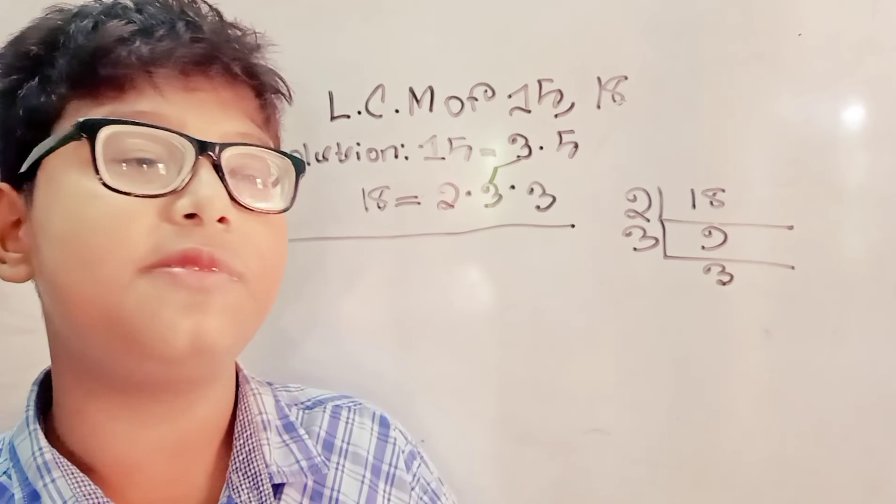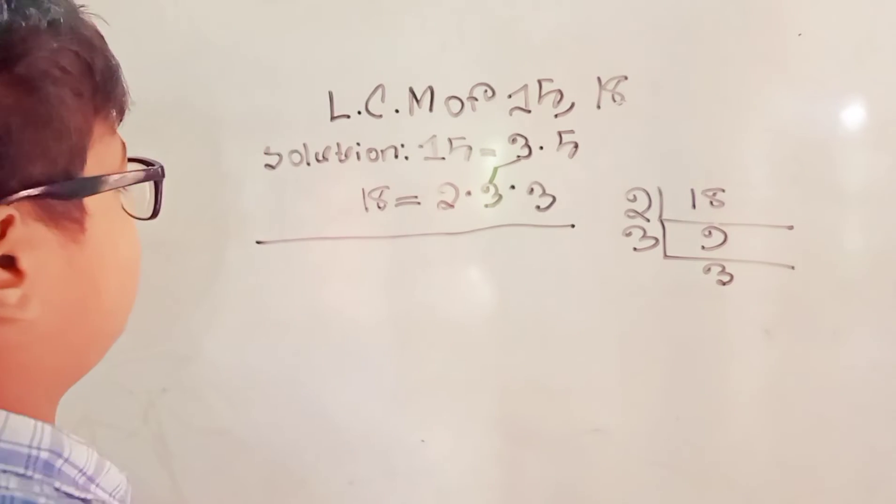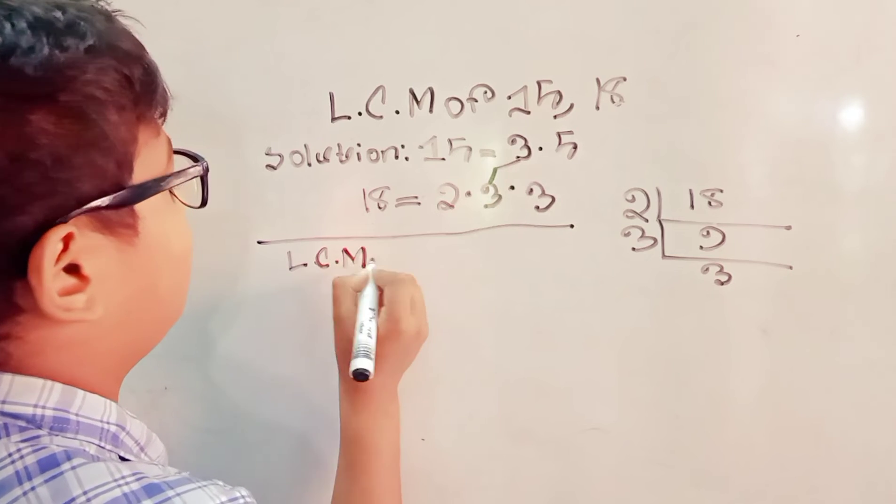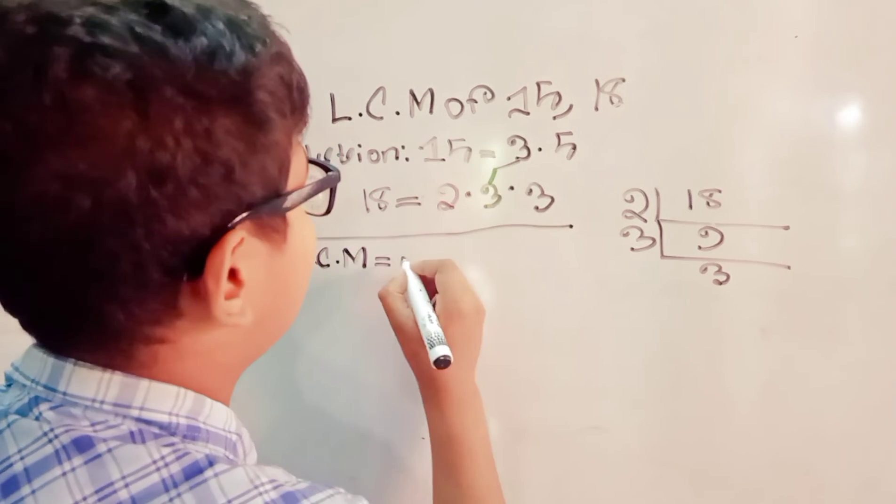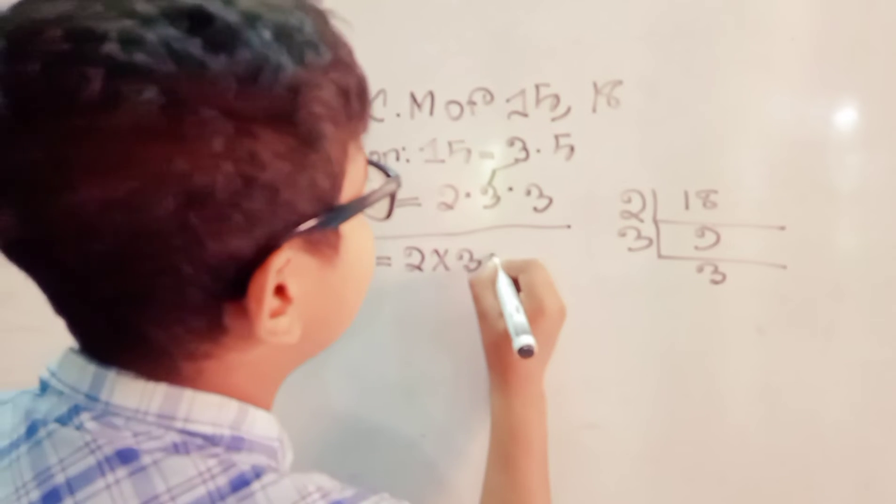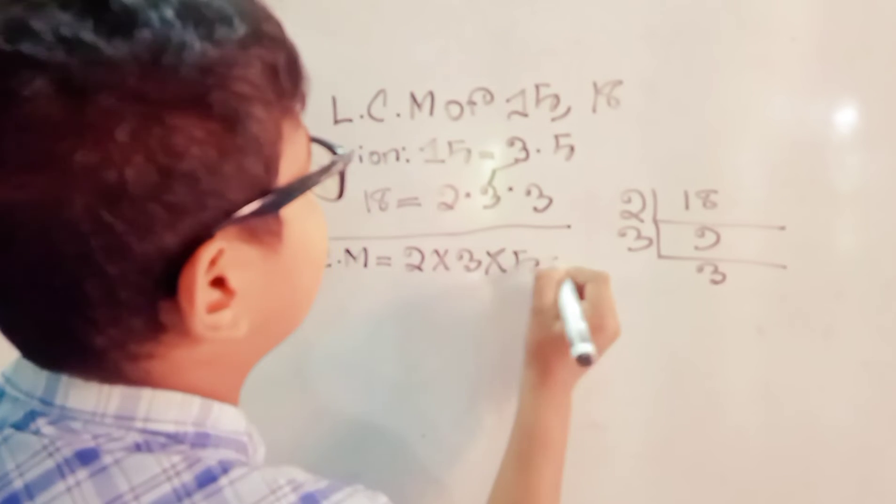Bring down the primes in each column. LCM equals 2 into 3 into 5 into 3.